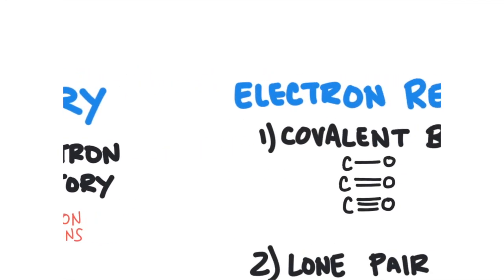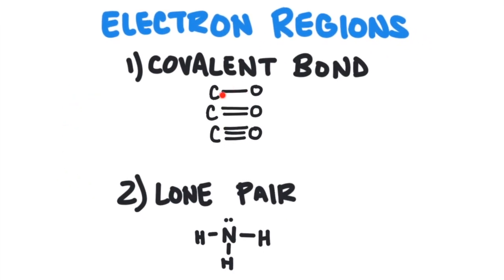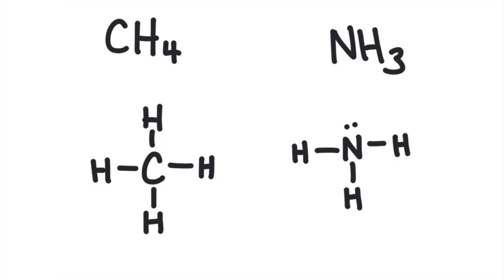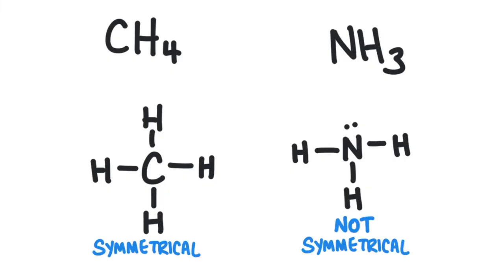An electron region can either be a covalent bond — that could be a single, double, or triple bond; they all count as one region — or it could be a lone pair of electrons. NH3 and CH4 both have four electron regions. CH4 has four bonds, while NH3 has three bonds and one lone pair. A lone pair isn't the same as a bonding pair of electrons. Electrons spread out when they're in a bond, but when they're in a lone pair, they create a dense region of negative charge. So CH4 is symmetrical while NH3 is not symmetrical. There's a dense region of electrons on the NH3, which creates a negative region on the molecule, so it has a dipole.